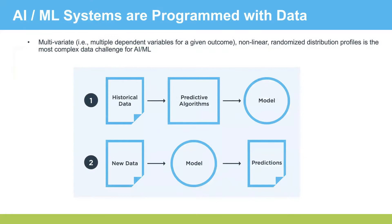For AI and ML, you need multivariate data — i.e., multiple dependent variables — and you need it in a nonlinear randomized distribution profile. That's one of the most challenging requirements for AI and ML training, and that's the beautiful thing about synthetic data: it can synthesize that.